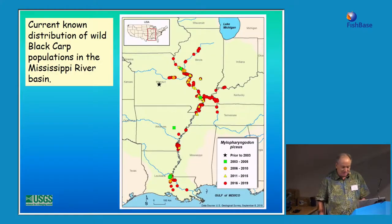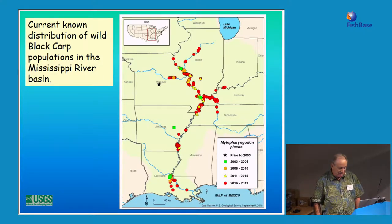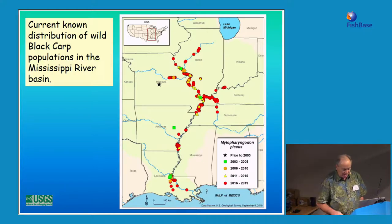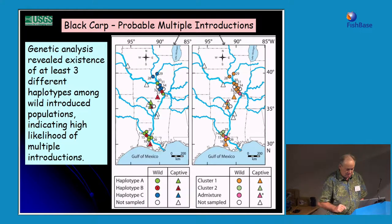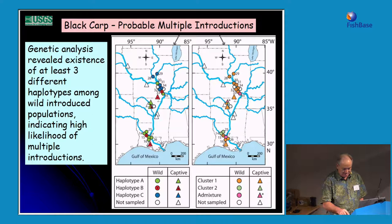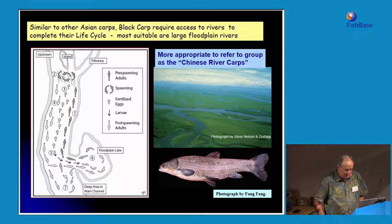Captures by commercial fishers indicate that the wild black carp population now ranges from the mouth of the Mississippi River in Louisiana north to Illinois — this is the most up-to-date distribution map. They have not yet been reported from the Great Lakes, but there is a connection. Our genetic analysis revealed that at least three different haplotypes are present in the wild introduced population, indicating a high likelihood of multiple introductions.